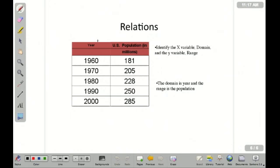So we've got a table here, a relation, that shows the U.S. population and the year. The x variables, the domains, are the years. That's 1960, 1970, 1980, 90, and 2000.